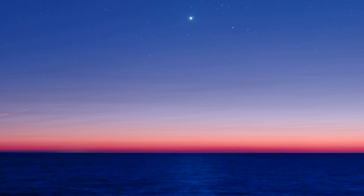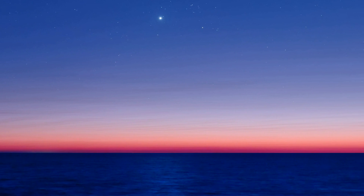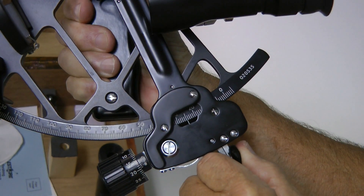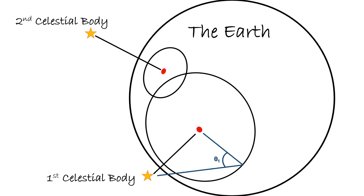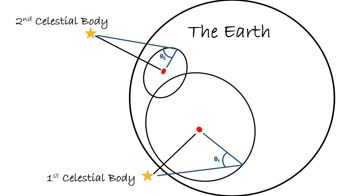When choosing a celestial body, we want to avoid one that is more than 75 degrees above the horizon. Remember, 90 degrees is directly overhead, and as we get close to this limit, choosing the proper horizon to measure from gets tricky and may lead to large errors. Also, our line of position, which is in fact a circle, becomes small enough to cause issues if we're close to 90 degrees.